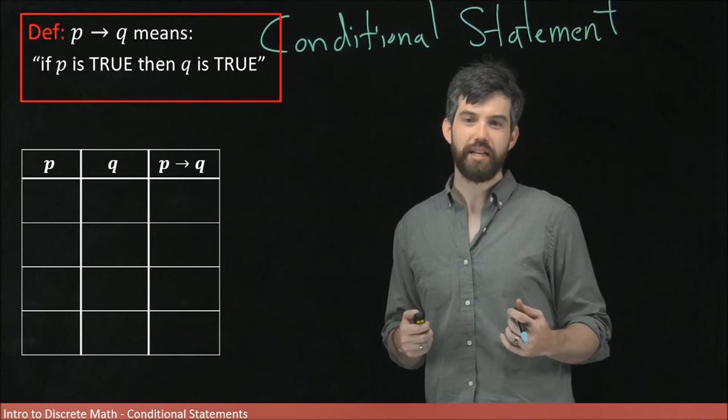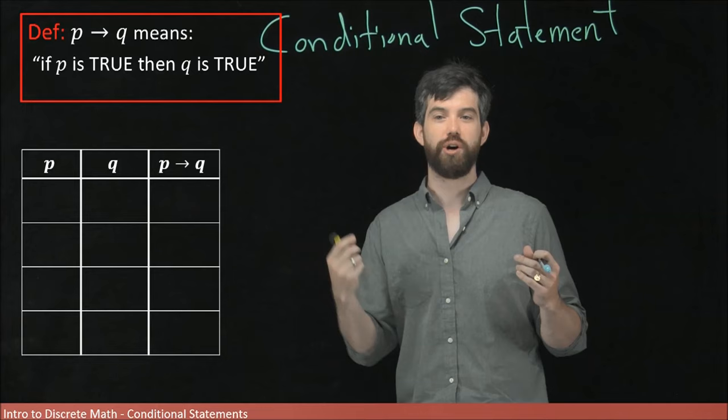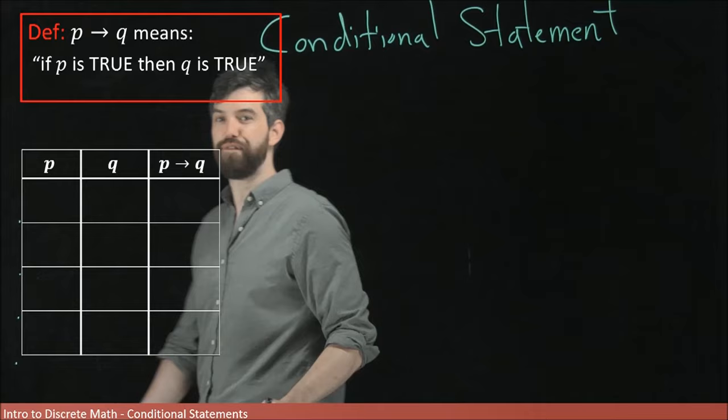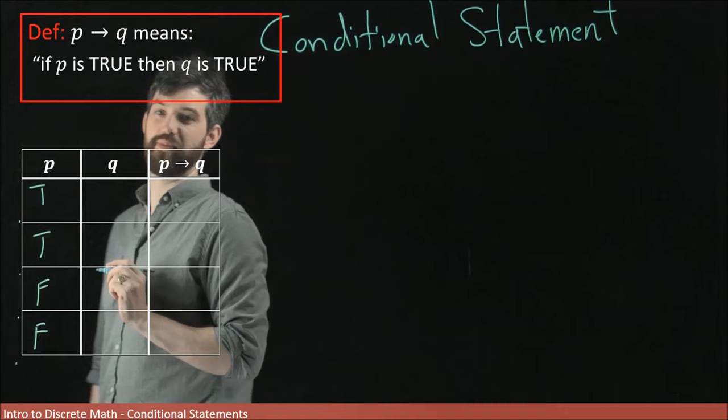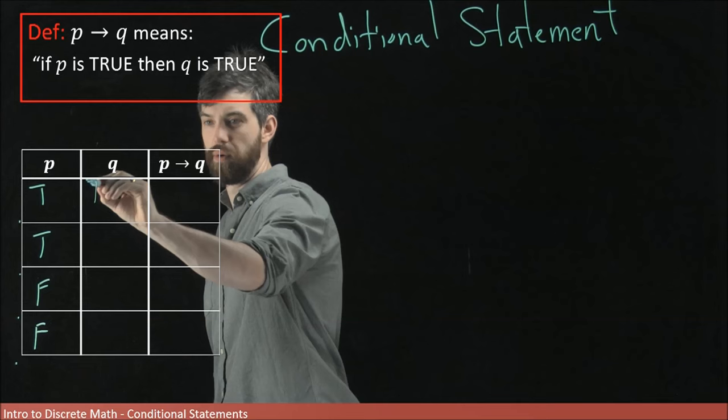Let's try to come up with a truth table for the implication, for the conditional P implies Q. Our first step is going to be to fill in the variables. For my P variable, I have true, true, false, and false as possibilities. And for my Q variable, we could have true, false, true, and false.